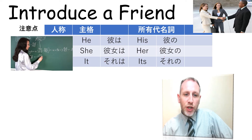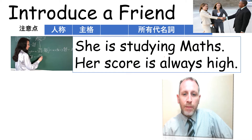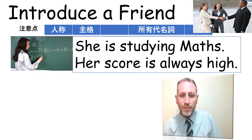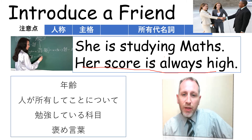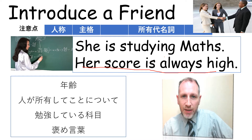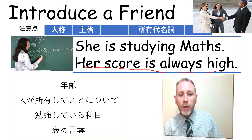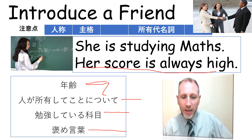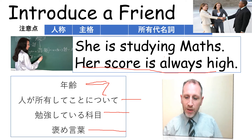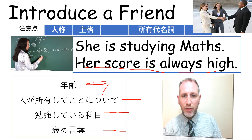Let's look at this lady. She is studying mathematics, or maths. And the second sentence says that her score is always high — meaning she is very clever. So in those two examples: he is 20, his car is red; and she is studying maths, her score is always high. It's very easy to introduce a friend and give a lot of information with simple words.